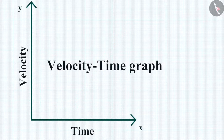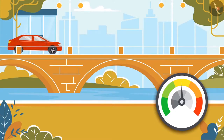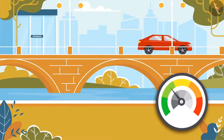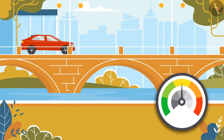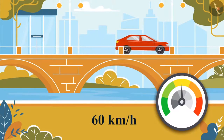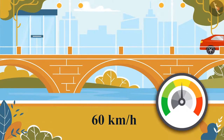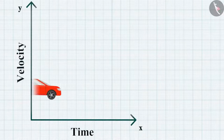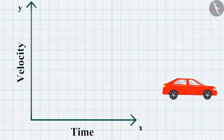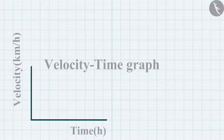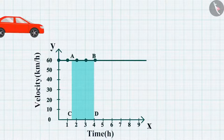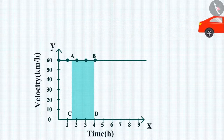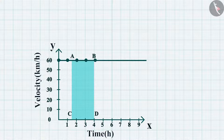Now let's study the velocity-time graph. The variation in velocity with time for an object moving in a straight line can be represented by a velocity-time graph. Suppose a car moves at a uniform velocity of 60 km/h in a certain direction. Time is along the x-axis and velocity along the y-axis. Since velocity is constant, the graph is a straight line parallel to the x-axis.